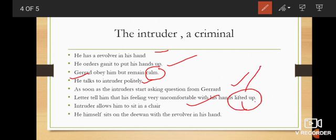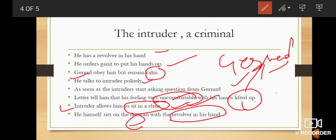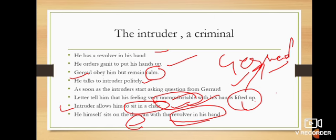Gerrard tells the criminal that he is feeling very uncomfortable with his hands up, so he wants to keep his hands down. The intruder allows him to sit in a chair. He himself sits on a divan with the revolver in his hand, which shows that the intruder has entered the house with some reason.